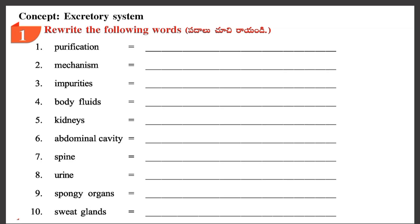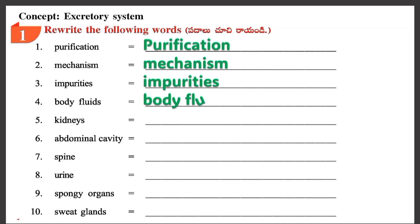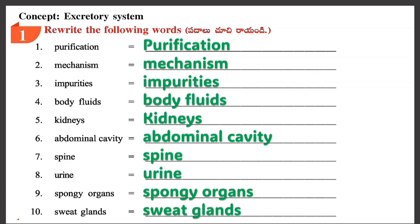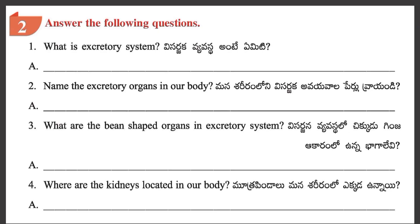Rewrite the following words: Purification, Mechanism, Impurities, Body Fluids, Kidneys, Abdominal Cavity, Spine, Urine, Spongy Organs, Sweat Glands. Section 2: Answer the following questions.